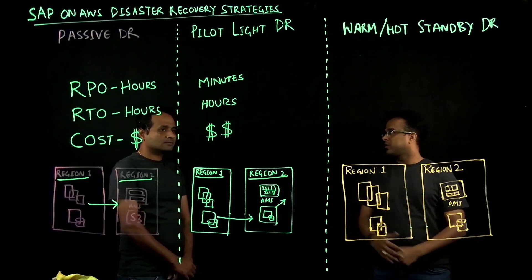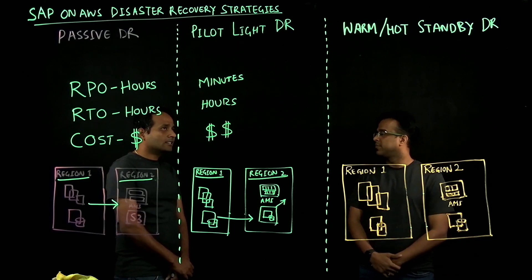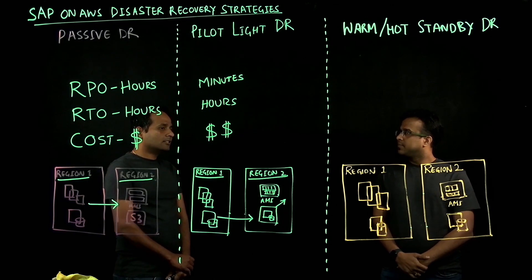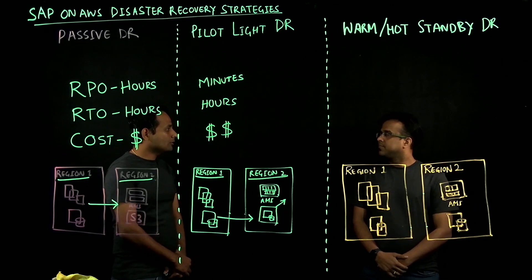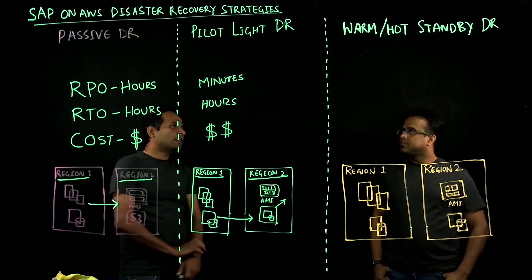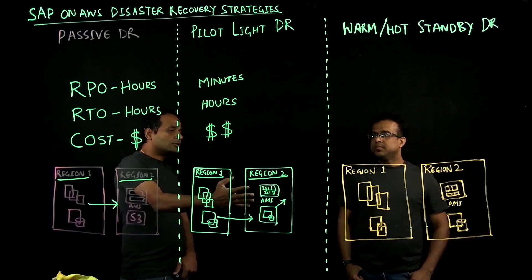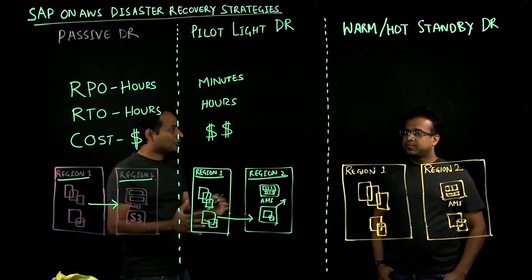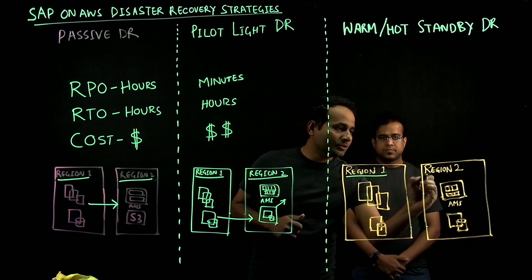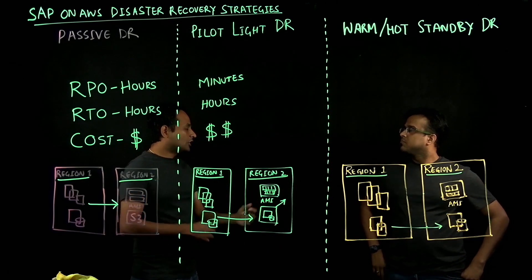How about warm and hot standby? What are the use cases where customers can use warm and hot standby? There are customers that would like to achieve the lowest possible RPO to support their business requirements. For them, warm or hot standby is going to be the right pattern. If you look at the components, the database is like for like — Region 1 and Region 2 are going to be like for like and constantly replicated, so that any changes happening in your primary region are replicated into your secondary region.